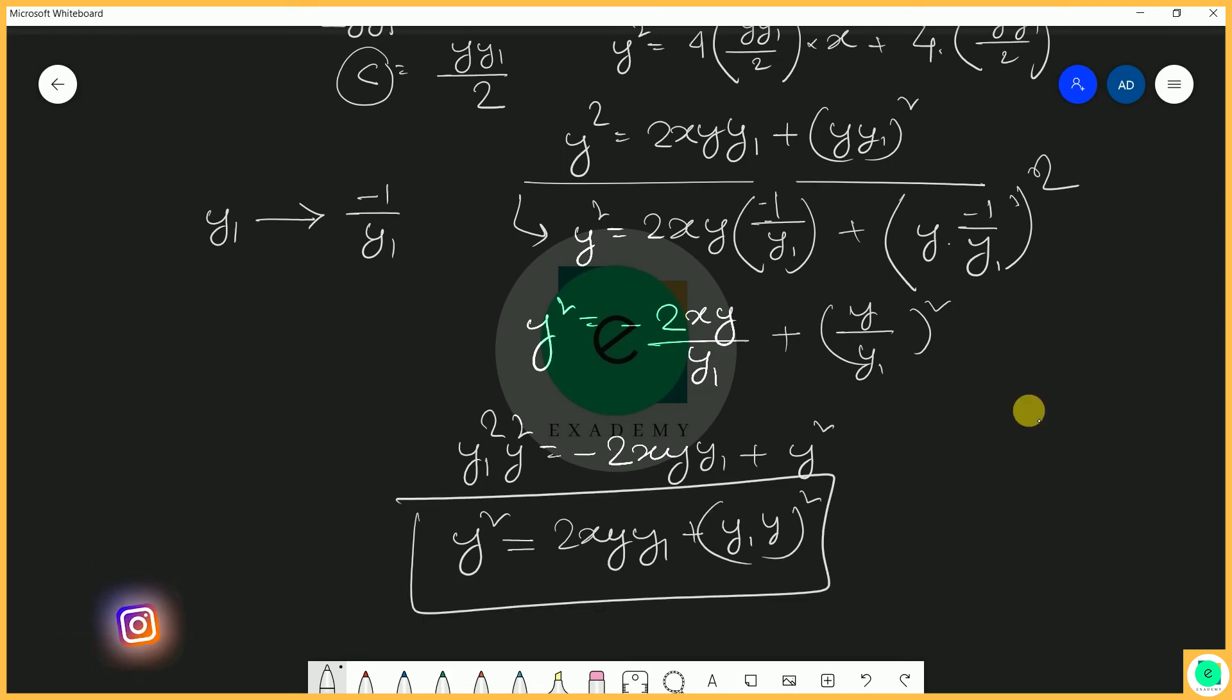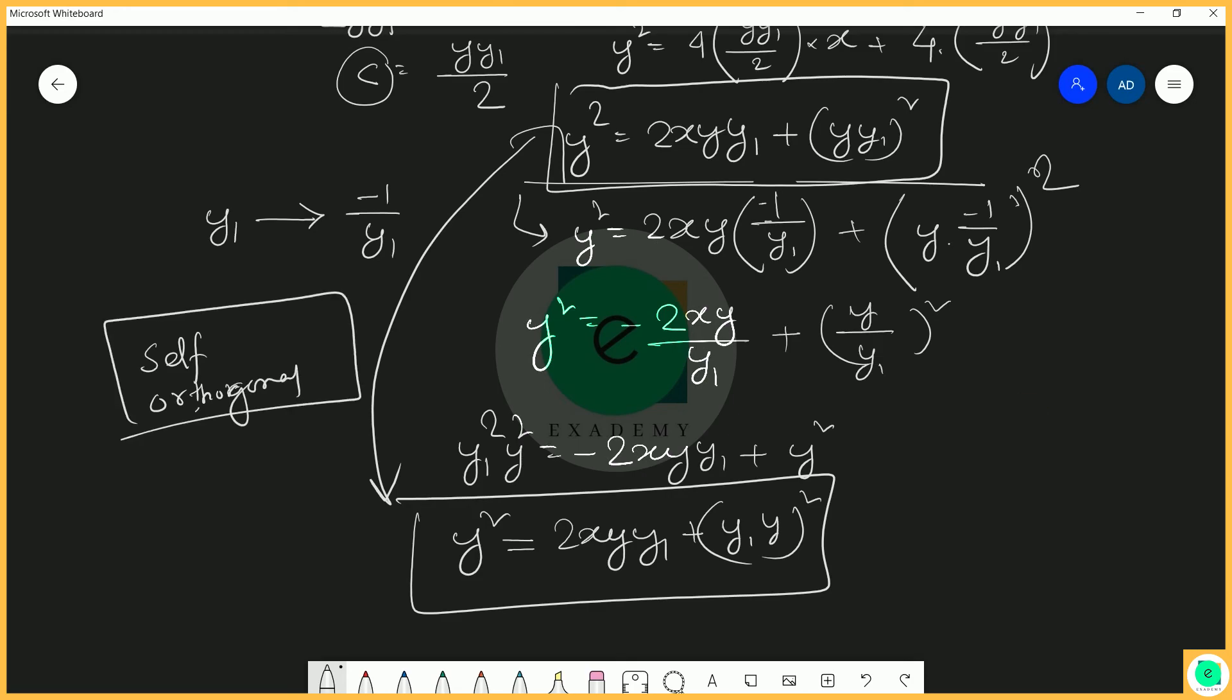This equation and the original equation are both the same. So this is the proof that this is self-orthogonal. Clear?